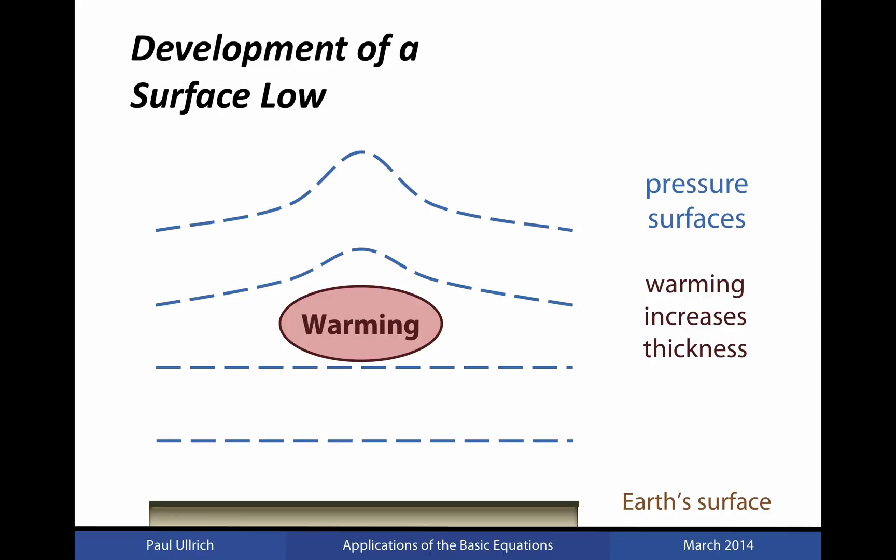That is, the warming within the middle of the troposphere causes an increase in the volume required between geopotential surfaces that then push up the geopotential surfaces above the point of warming. Consequently, we have thicker layers in the region where the warming has occurred, and we have effectively increased the geopotential height above the warming point.